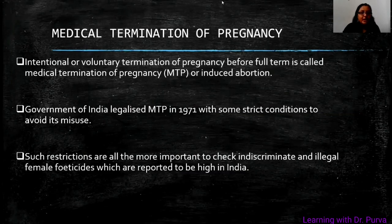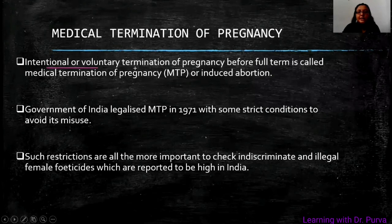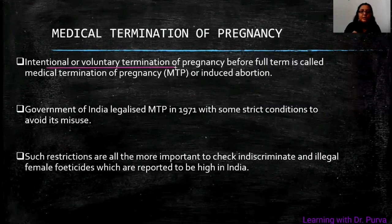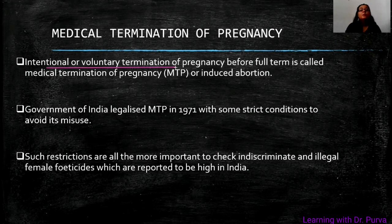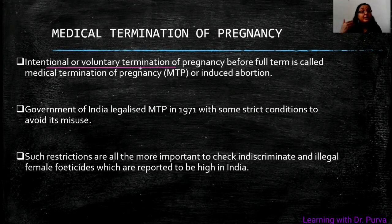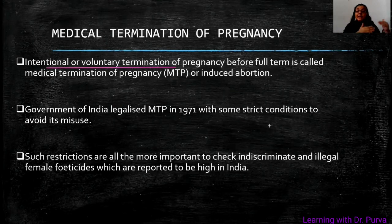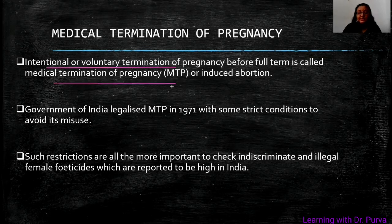Medical Termination of Pregnancy means intentional and voluntary termination of pregnancy before the full term. A human female has a normal time period of pregnancy, which we also call gestation period, of 9 months. So if a female intentionally and voluntarily terminates her pregnancy before 9 months, that is called medical termination of pregnancy. There is a particular duration decided under some conditions. In India, it was legalized in 1971.